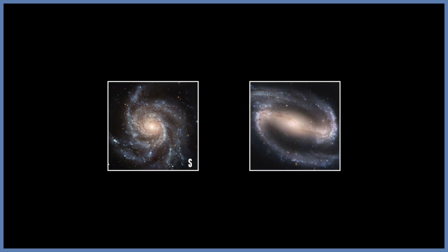Spiral galaxies are divided into two main types: regular spirals, which are denoted with the letter S, and the barred spiral galaxies, which are marked SB. The regular spirals basically have arms that spiral inwards into the galactic centre, whereas the barred spirals seem to have a bar shape in the centre, from which the arms extend out.